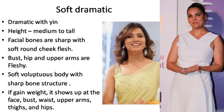Next is Soft Dramatic. In this case, your height is medium to tall. Your facial bones are sharp but your cheeks have soft, round flesh — plumpiness on the cheeks. Your bust, hips, and upper arms are fleshy. The body is soft and voluptuous, but the bone structure is sharp. When weight is present, it tends to go to the face, waist, upper arms, thighs, and hips.